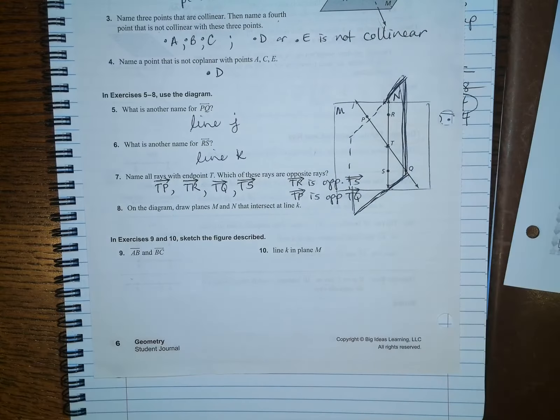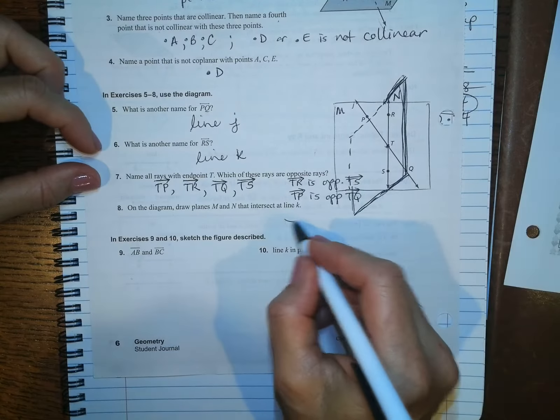And then that's going to be labeled N. Not perfect, but it's pretty close. But if I use pencil, it doesn't show up in the video. So we'll do what we can. Okay, so that's the picture.